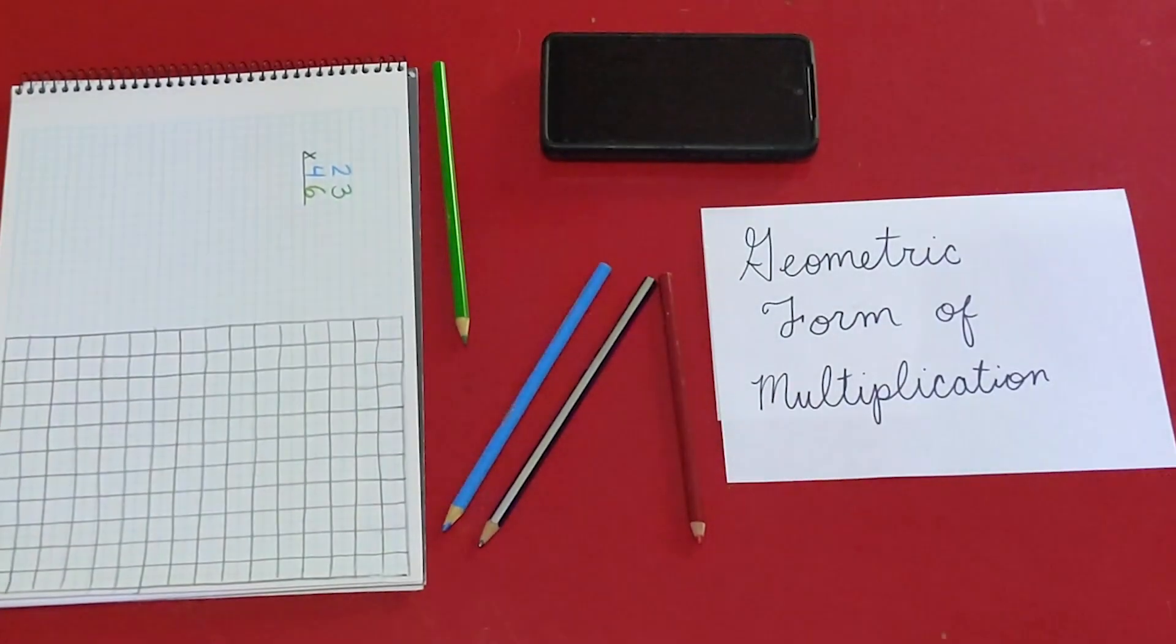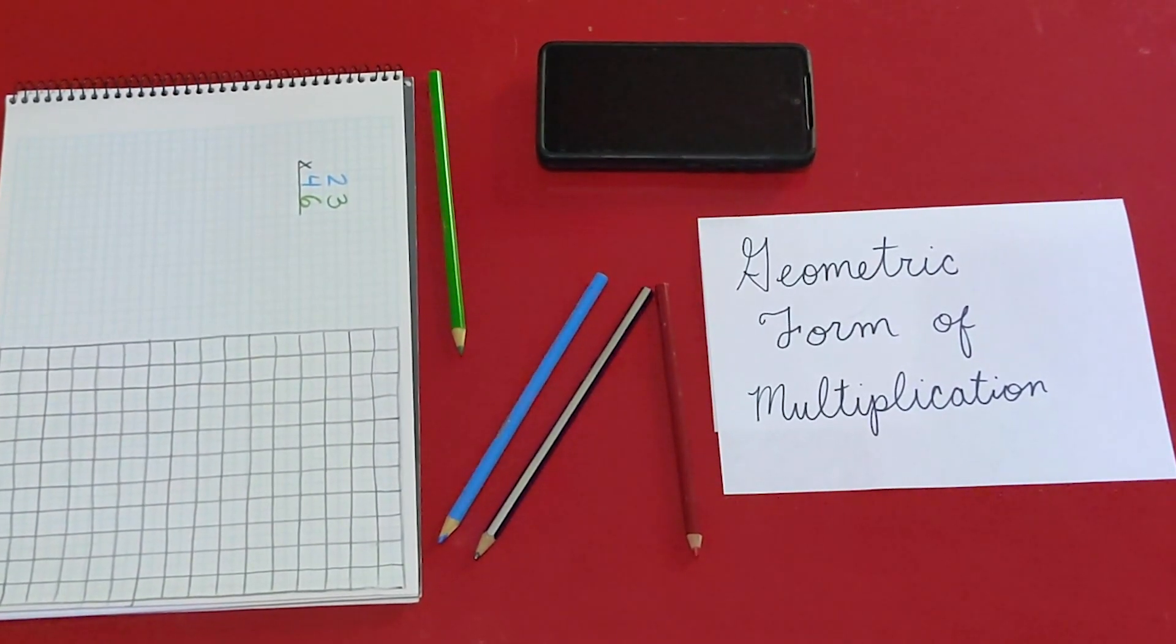I wanted to give you a lesson today for practicing math. It's called the geometric form of multiplication. You might want to pause the video now so that you can write down the name of the lesson in your journal and maybe at the top of your page to give it a nice title.